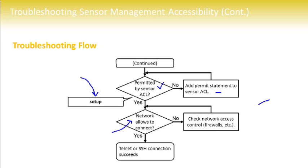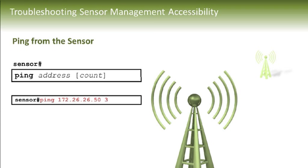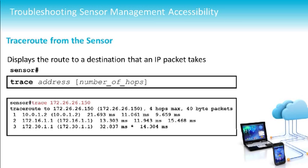If the ACL checks out, make sure the network allows connectivity to the sensor — maybe there's a firewall between the management workstation and the intrusion prevention system causing the issue. From the sensor itself, we can issue a ping with a particular repeat count as part of troubleshooting. We can also do a traceroute from the sensor to a particular device out on the network.